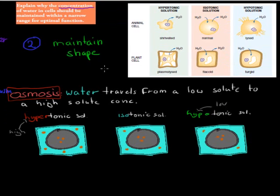The second part is we need to have a good shape for our cells. We need to maintain its shape. I'm going to explain this picture.